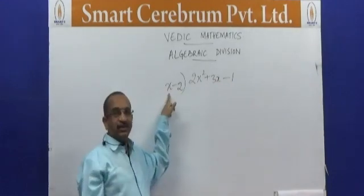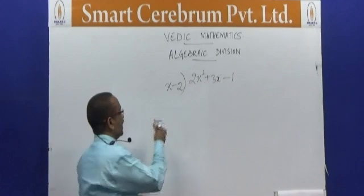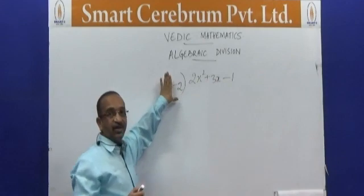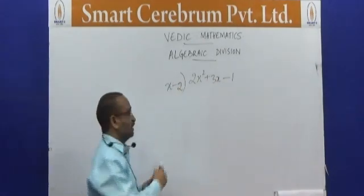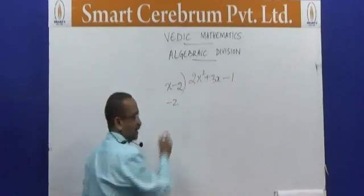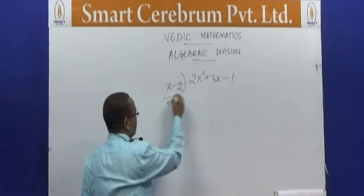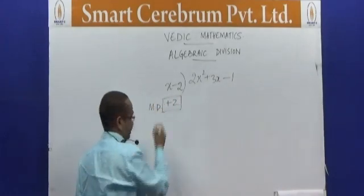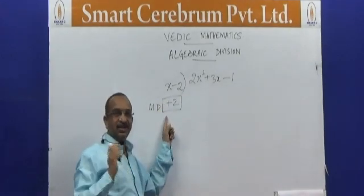What I do is apply the sutra Paravartya Yojayet — Transpose and Apply — of Vedic mathematics. I just take the deviation, which is nothing but the numerical constant. Just close x and what remains — minus 2 — is my deviation. I take my deviation and change the sign: if it is minus, I make it plus. So this will be my modified divisor. My modified divisor is plus 2.